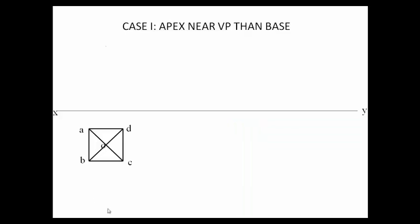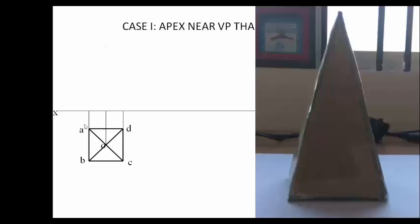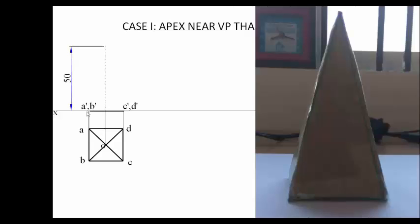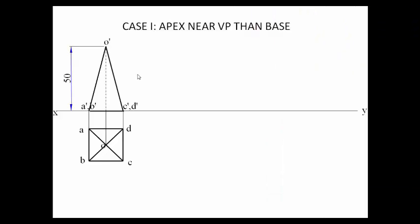Looking at the object from the front, we draw projector lines. Point a-dash b-dash and c-dash d-dash are located. The axis length is 50 mm and all base edges are 25 mm. We draw a dash-dot axis line and join a-dash b-dash to o-dash, completing step 1 where the object rests with its base on the horizontal plane.